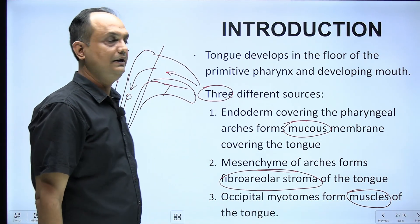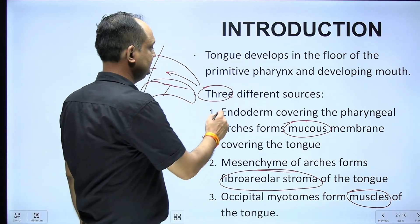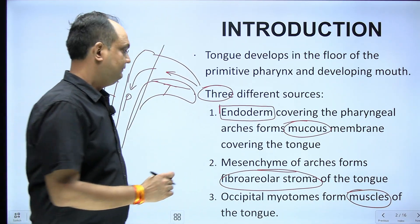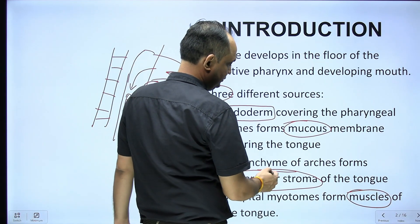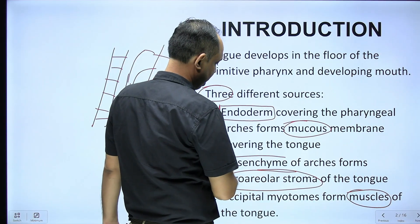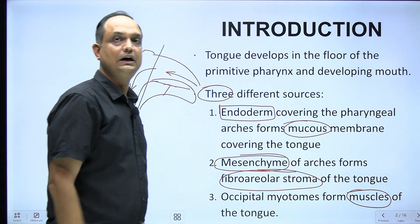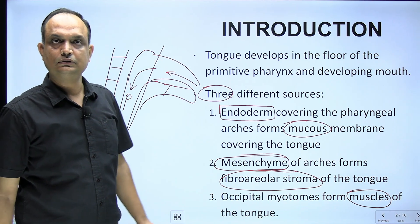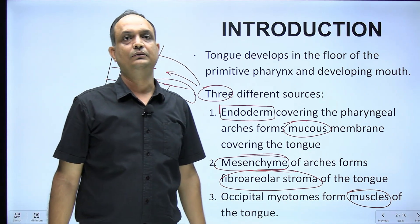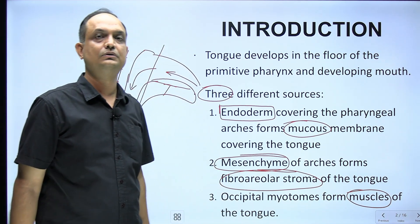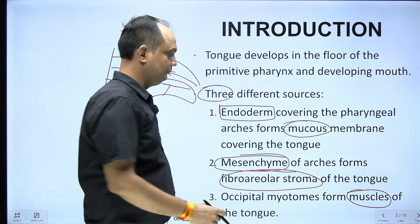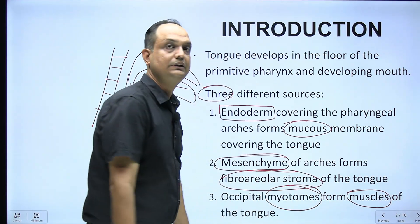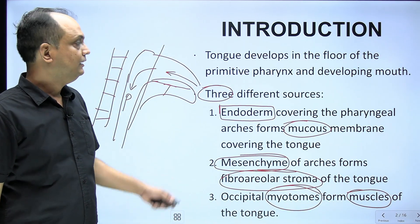The mucous membrane comes from the endoderm of the inner side of the pharyngeal arches. The fibroareolar or connective tissue comes from the mesoderm of the arches. The muscles of the tongue also come from mesoderm, but specifically from the mesoderm of the occipital somites — the myotomes of those occipital somites.